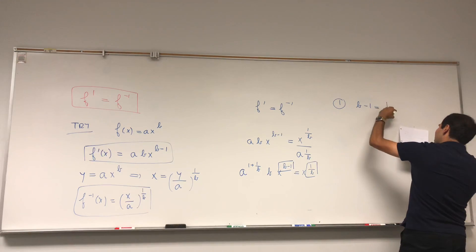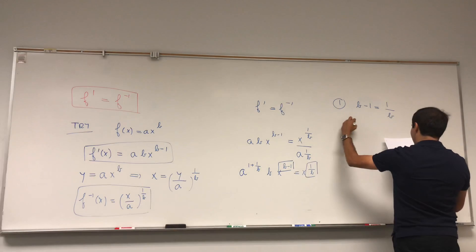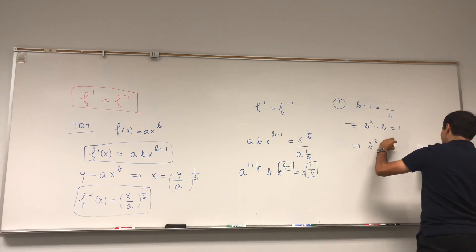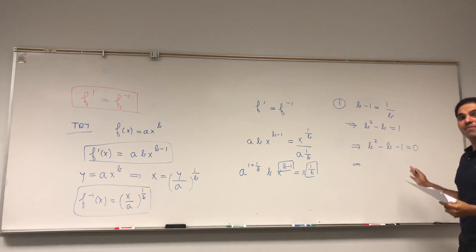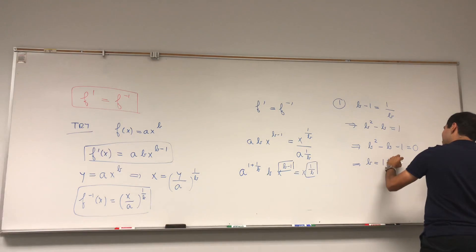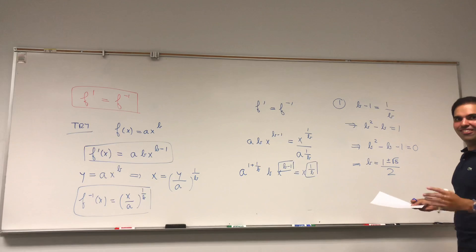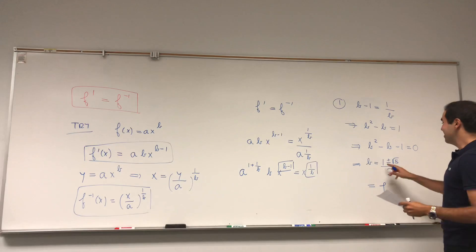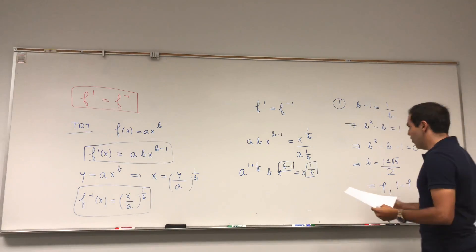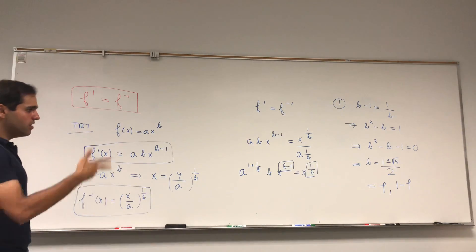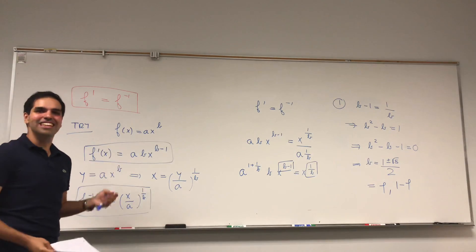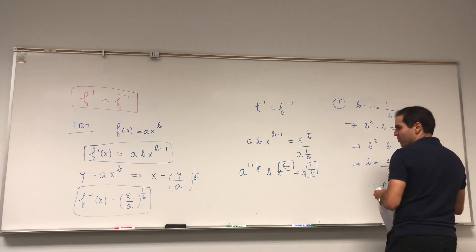Setting exponents equal: b - 1 = 1/b. Cross-multiplying gives b² - b = 1, so b² - b - 1 = 0. By the quadratic formula, b = (1 ± √5) / 2. Some of you will recognize this — one plus root five over two is the golden ratio φ. So the exponent must be the golden ratio, which is pretty cool.